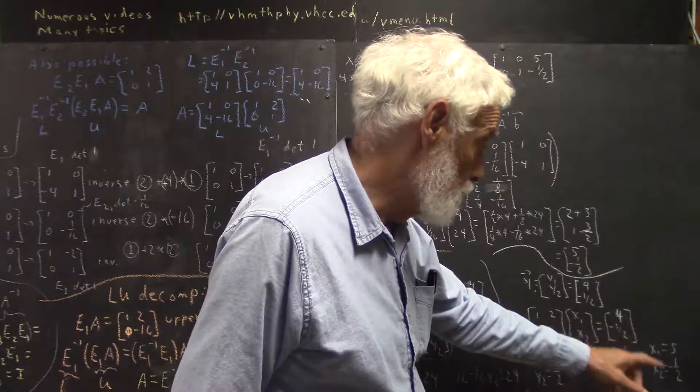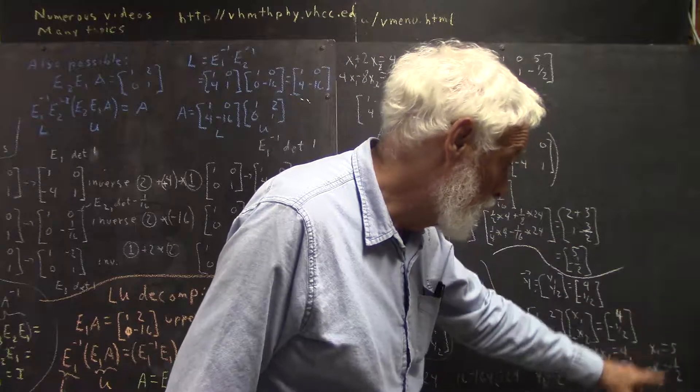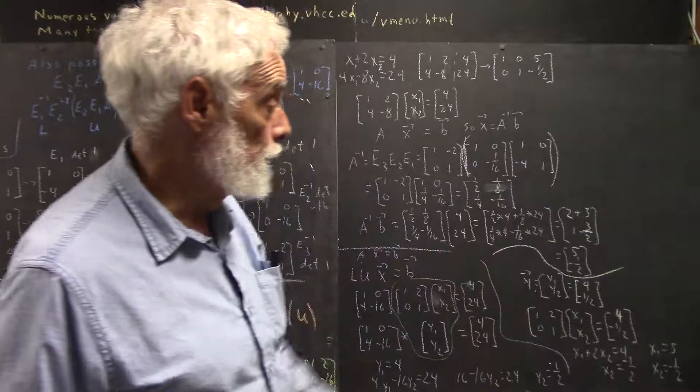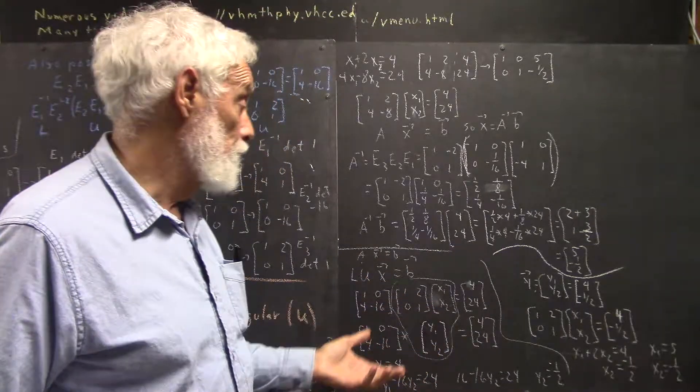2 times negative 1 half is negative 1. Add that to both sides. X1 equals 4 plus 1, or 5.